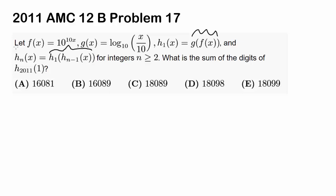This looks hard if you just try to do it right away, so let's build toward the solution step by step. Let's start by looking at h₁(x), and we'll eventually arrive at h₂₀₁₁(x). So h₁(x) = g(f(x)), meaning we evaluate f(x) and plug that into g(x).